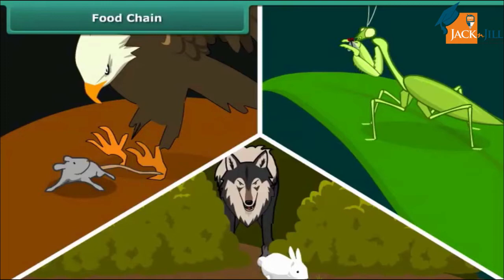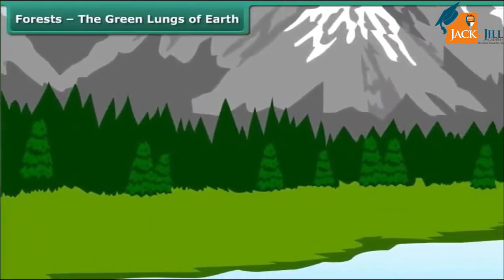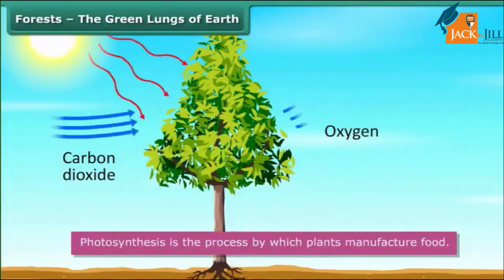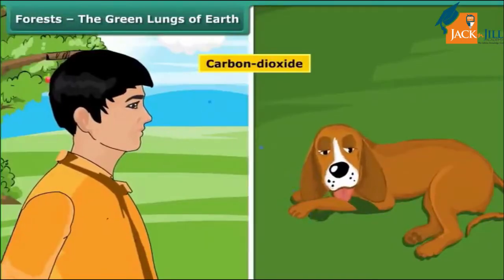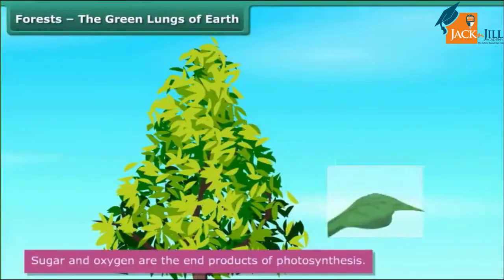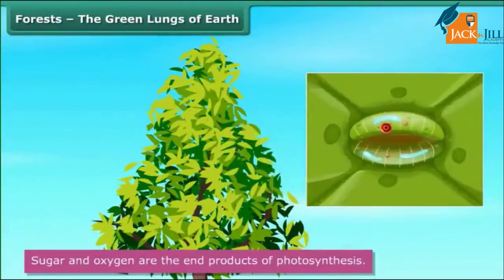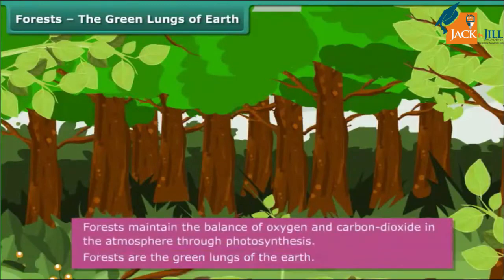Forests support many such food chains, which are interlinked to one another to form a food web. Forests maintain the balance of oxygen and carbon dioxide in the atmosphere through photosynthesis. Photosynthesis is the process by which plants manufacture food — plant leaves use light from the sun to synthesize food from carbon dioxide and water. Carbon dioxide is released by human beings and animals. That is why forests are called the green lungs of the earth.